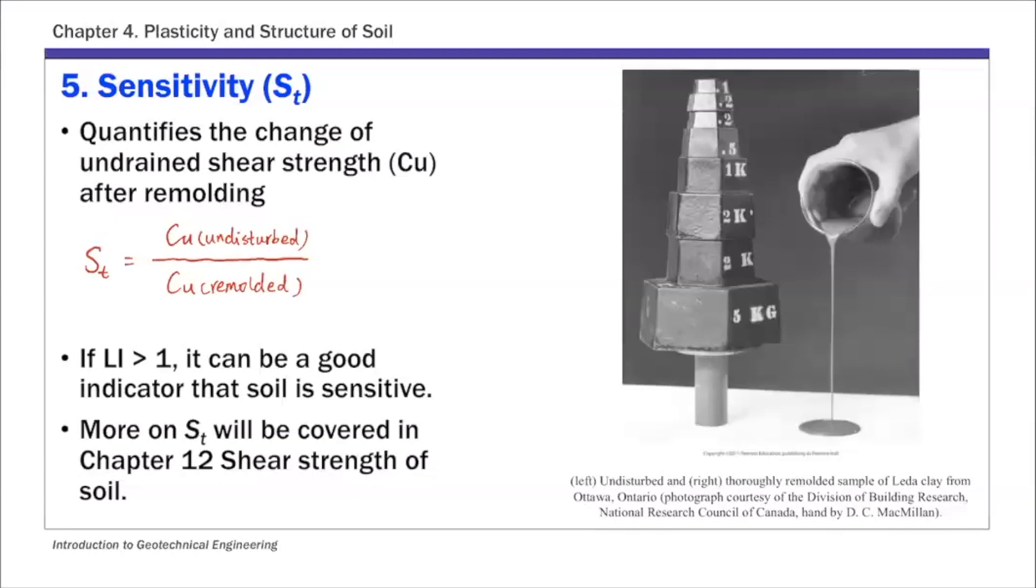As I put here for liquidity index, we said it's a good indicator of the sensitivity of clay. So if liquidity index is greater than 1, the clay is likely to be sensitive. The sensitivity is quantified using this ST, so basically how much strength soil loses upon remolding. We'll talk more again in Chapter 12 on shear strength of soil. So that's the fifth index, sensitivity.